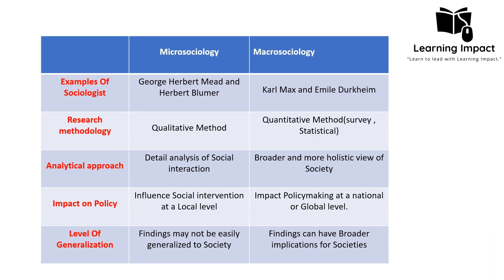Examples of micro sociologists include George Herbert Mead and Herbert Blumer. Mead gave the theory of 'I' and 'Me,' which focused on how individuals behave in a natural way and how they behave after socialization. Herbert Blumer was a sociologist who took Mead's theory and interpreted and analyzed it through the symbolic interactionism approach. Examples of macro sociologists include Karl Marx, who gave the theory of social conflict.